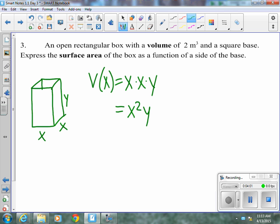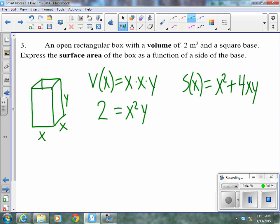So its volume, although we want it in terms of X, right now is X times X times Y or X squared Y. We know that this X squared Y is equal to 2. And we're trying to find the surface area in terms of X. Right now, our surface area is the sum of the areas of all the sides. So we have an X squared and we have 4 sides that are X times Y for the front, the back, the left, and the right. We don't need the top because it's open topped.